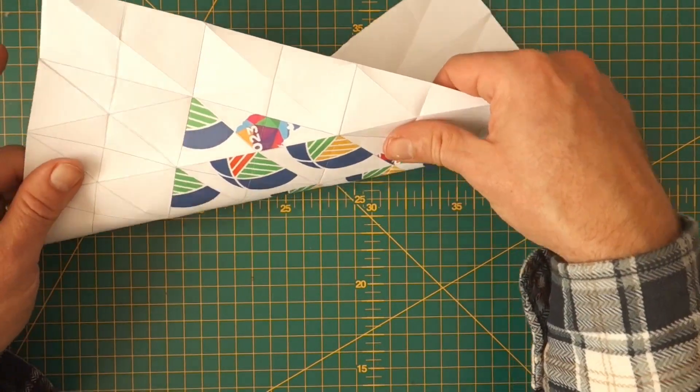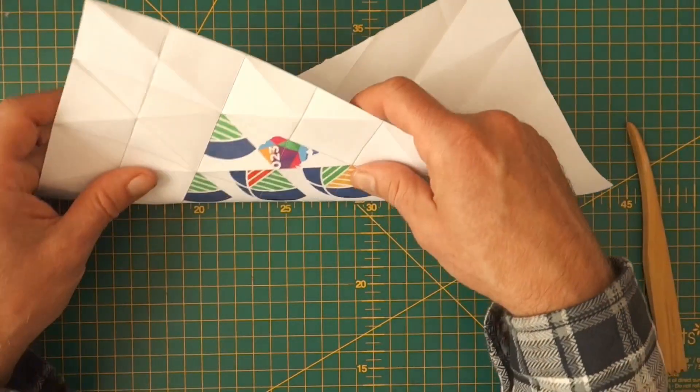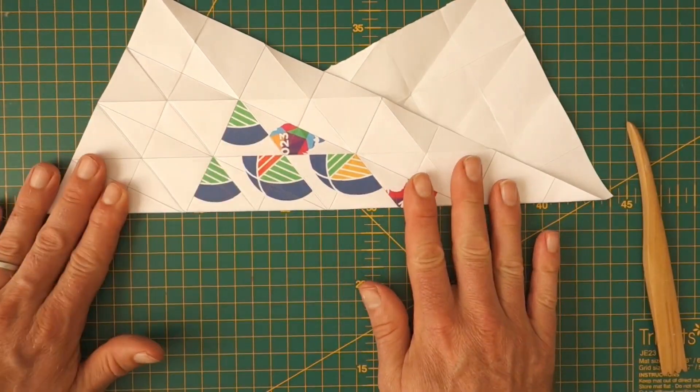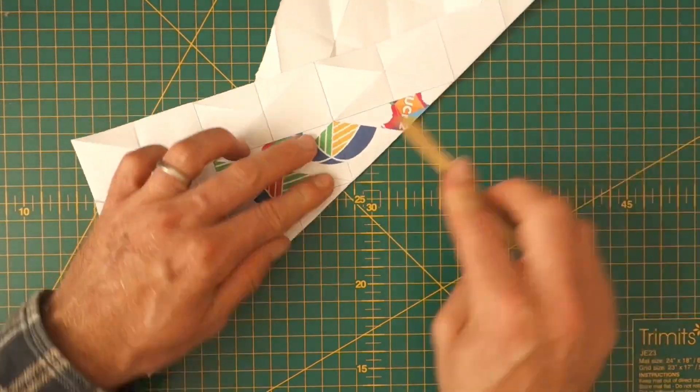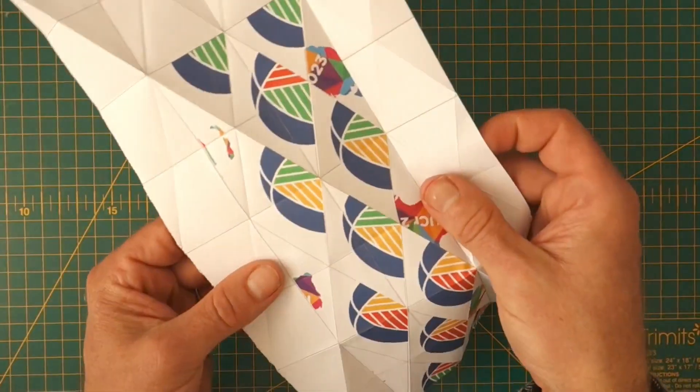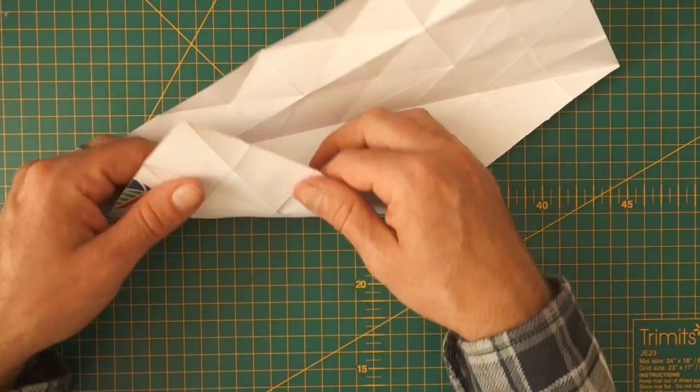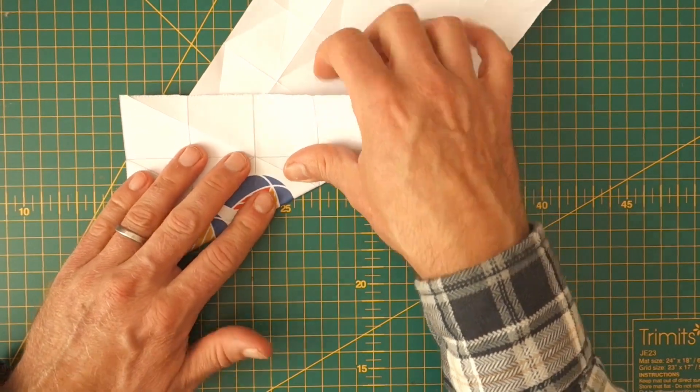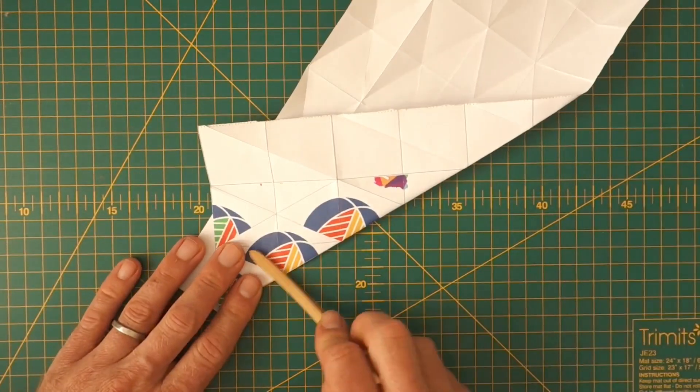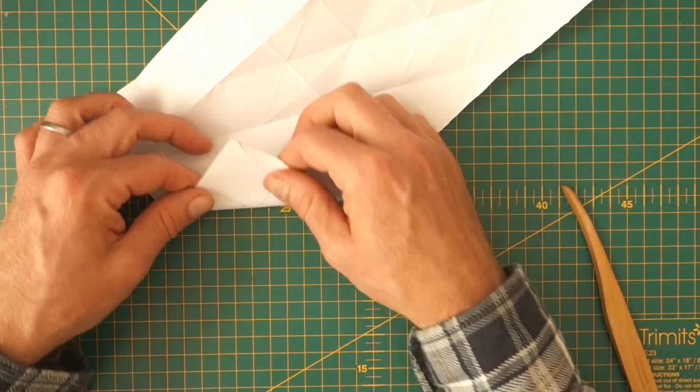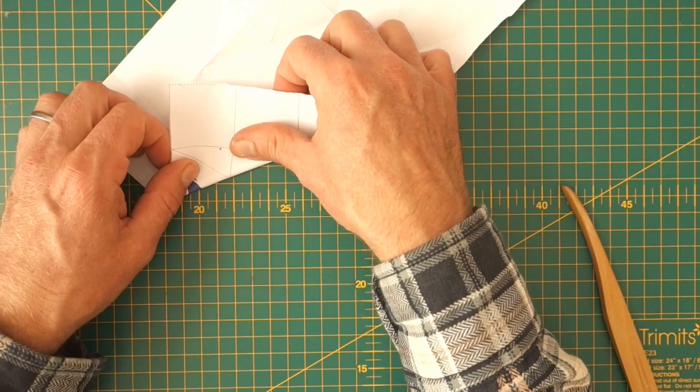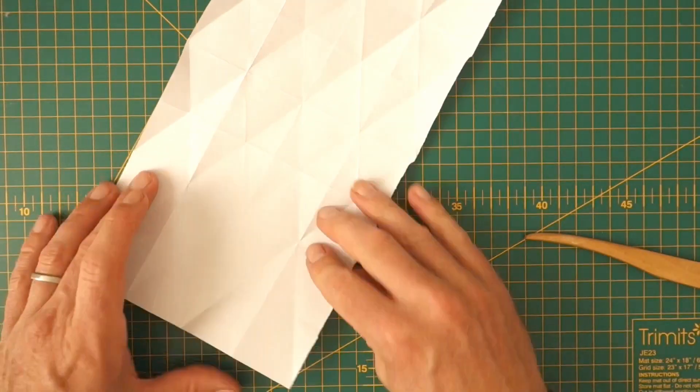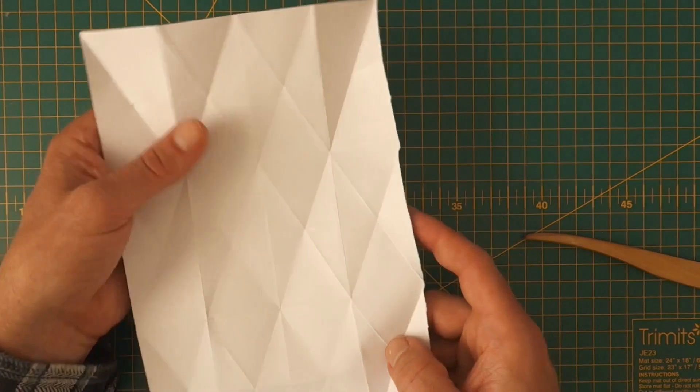Okay, start looking a bit messy. It doesn't really matter. Okay, right. We're nearly there. One over here. And another one over here. I think that's all of them. So you've got a rather creased piece of paper here.